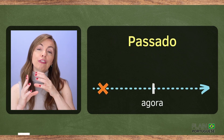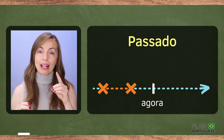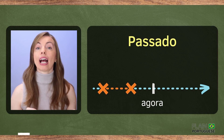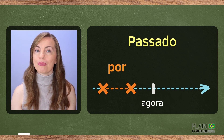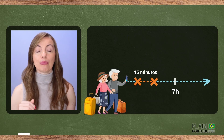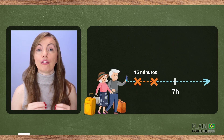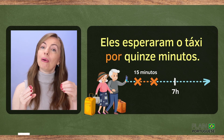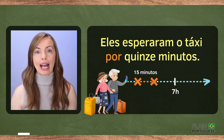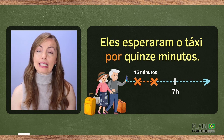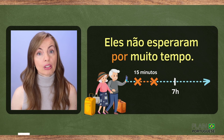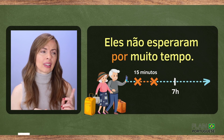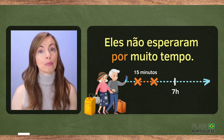Now, if you want to say for how long something happened in the past, don't use há, don't use faz. A good option is to use the preposition por. For example, in the morning they called a taxi and waited for fifteen minutes: Eles esperaram o táxi por quinze minutos. Well, they didn't wait for a long time: Eles não esperaram por muito tempo.